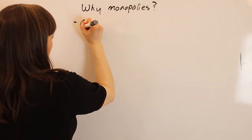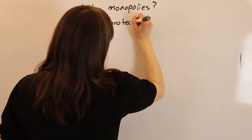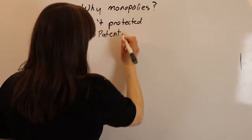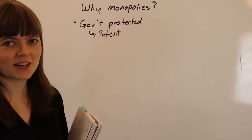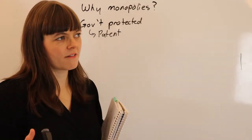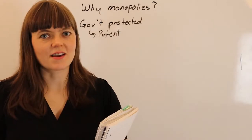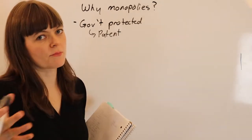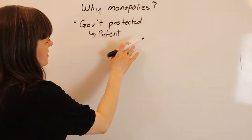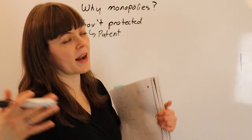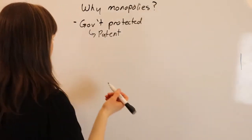One is it could be government protected. For example, in the case of a patent, if you invent a really cool medical machine, the government might want to reward you for that creative contribution to the economy by giving you a temporary monopoly over selling the product you've invented. And of course, there's a patent duration like 17 years where you get a monopoly over selling that particular product for 17 years.